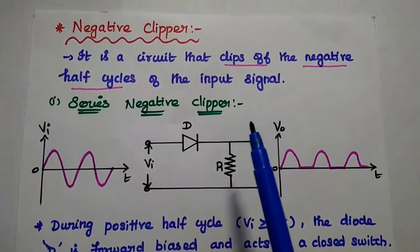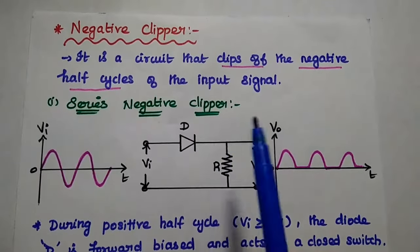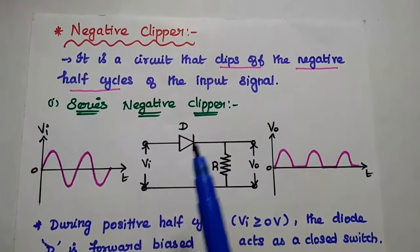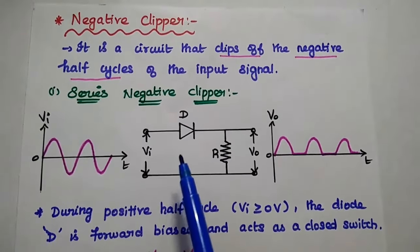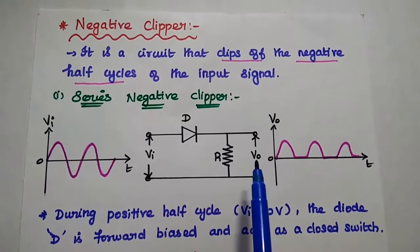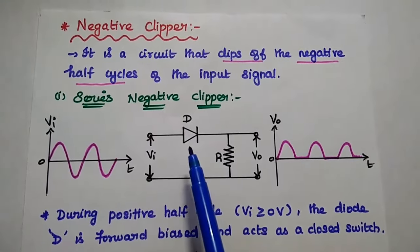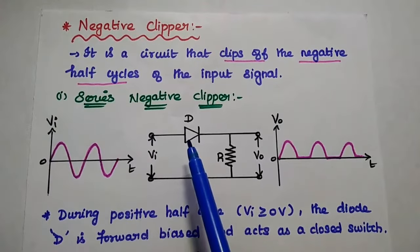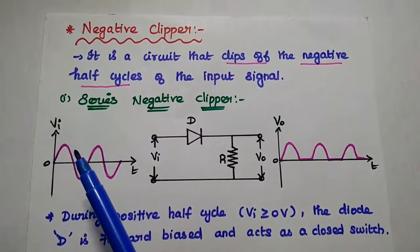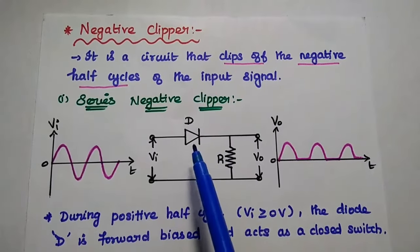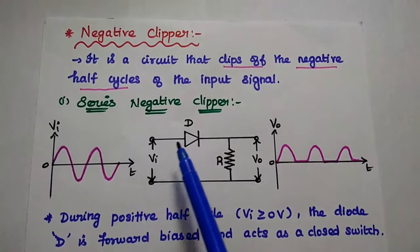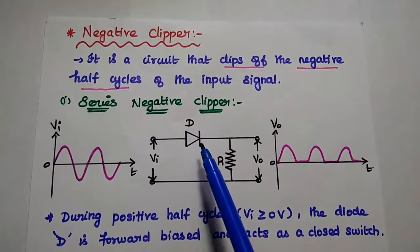Next is the negative clipper. It is a circuit that clips off the negative half cycles of the input signal. In the series negative clipper, the diode is connected in series with the load. In the negative clipper, the positive terminal of the diode is connected with the input side. During the positive half cycle, the diode is forward biased — positive and positive means forward biased.